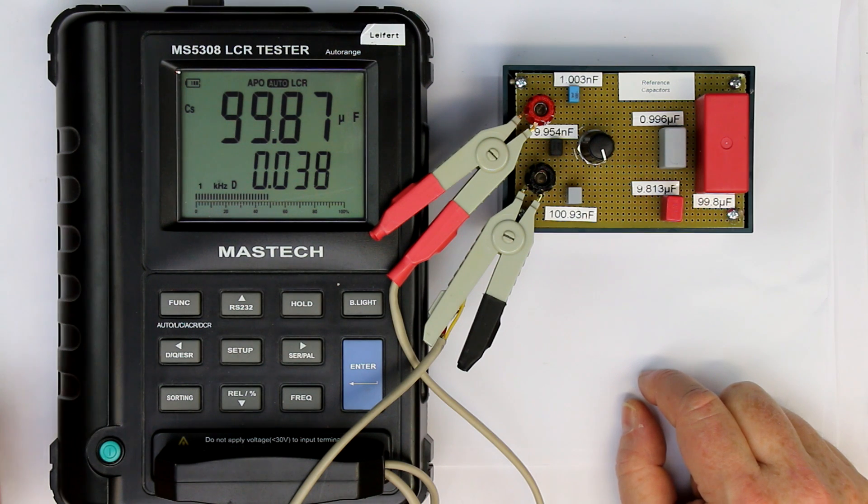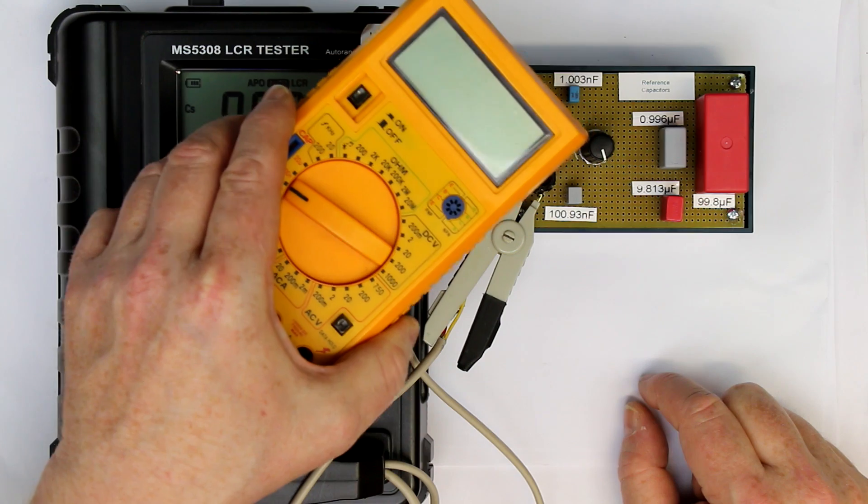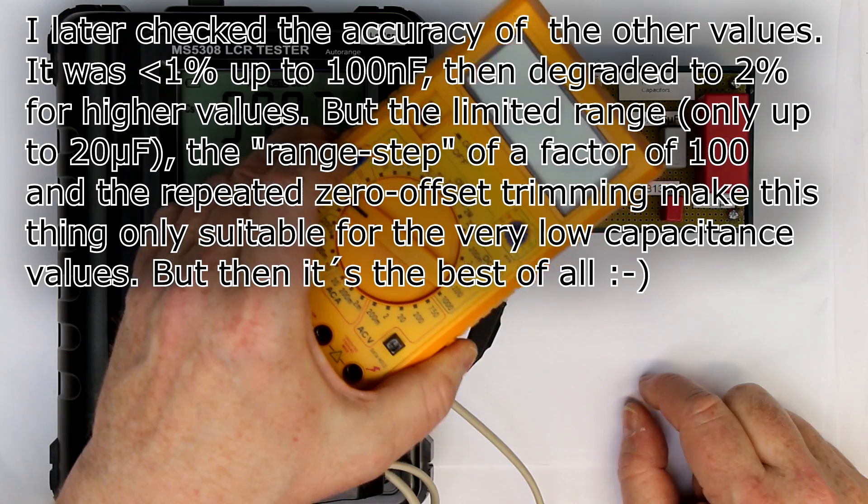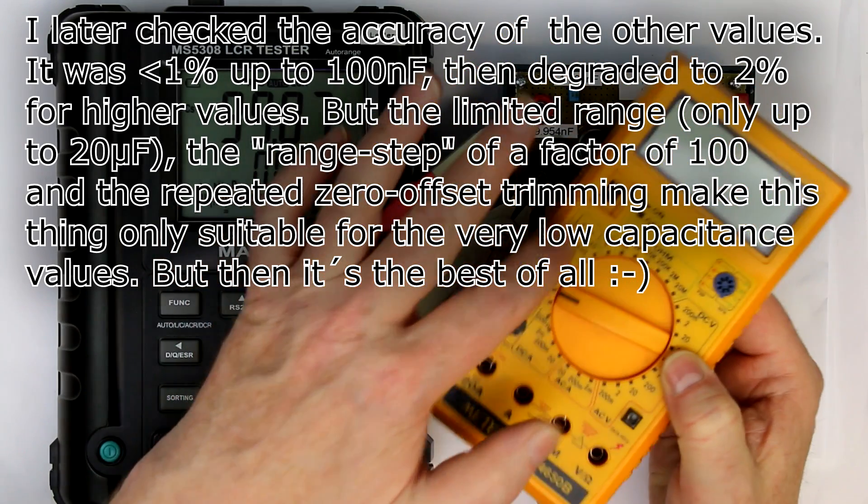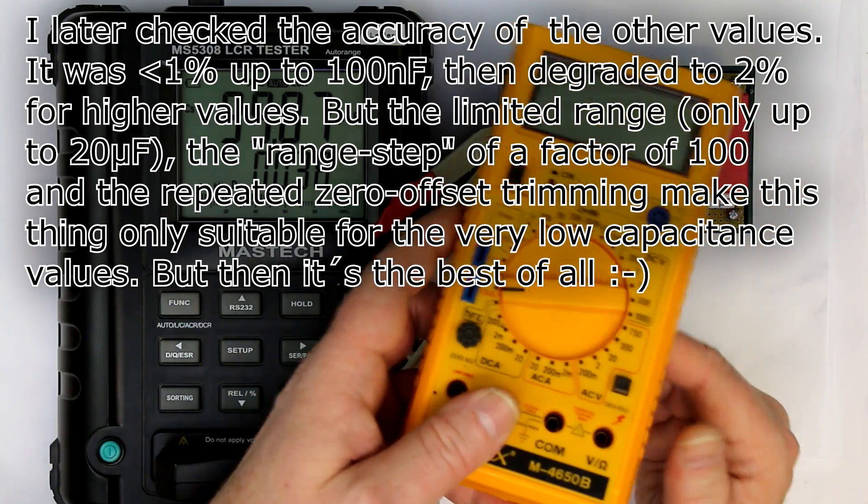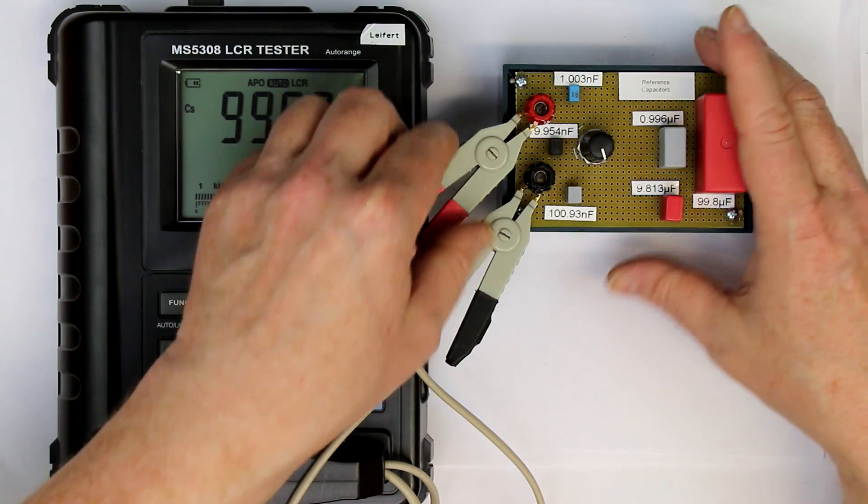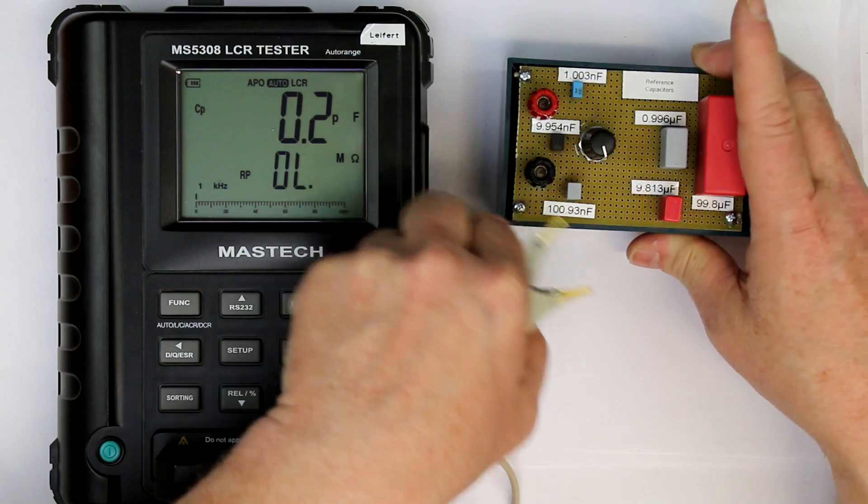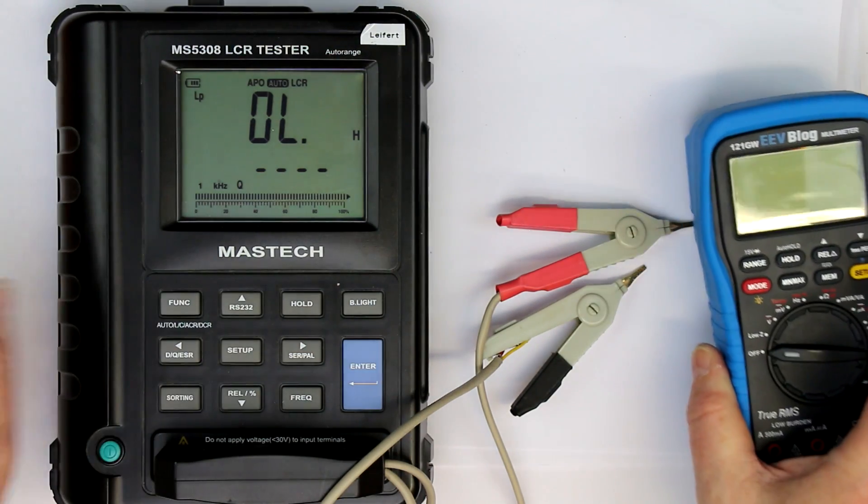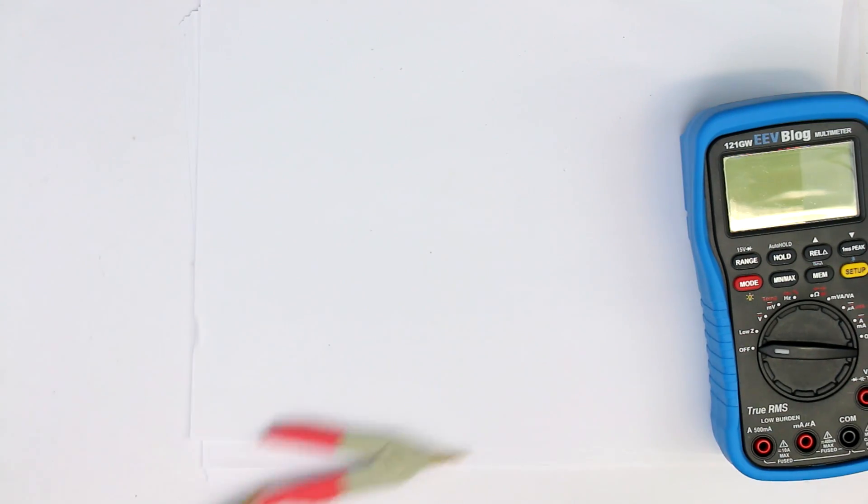Now let's see what our multimeters tell us. We won't deal with the Metex again because it's too much effort to put extra wires here into the slots. But you could see this was very accurate. And capacitance measurement is usually that kind of measurement with the worst specs.